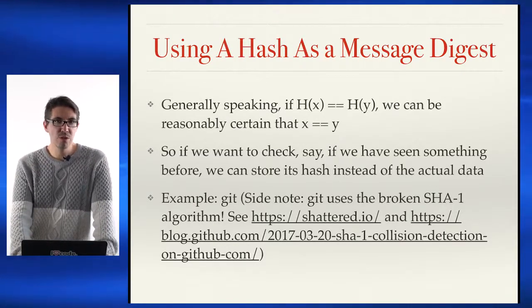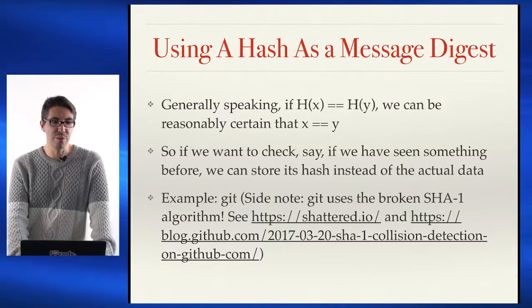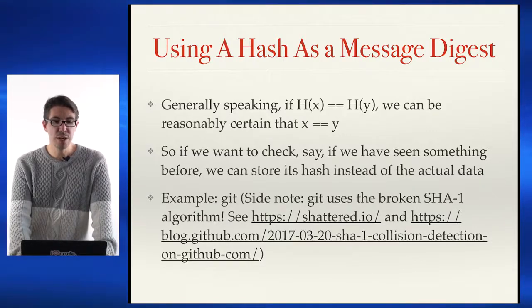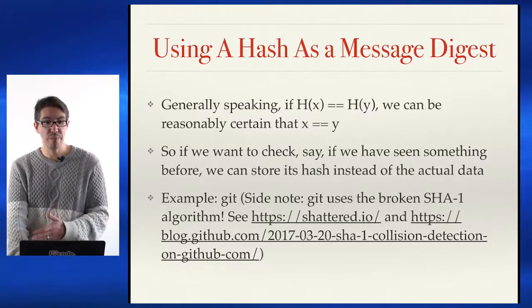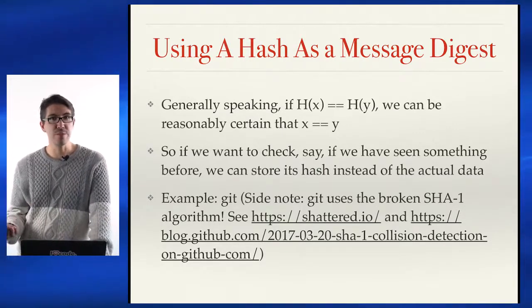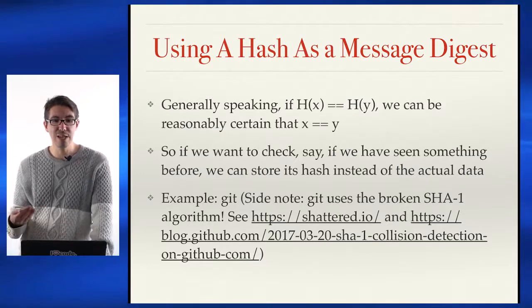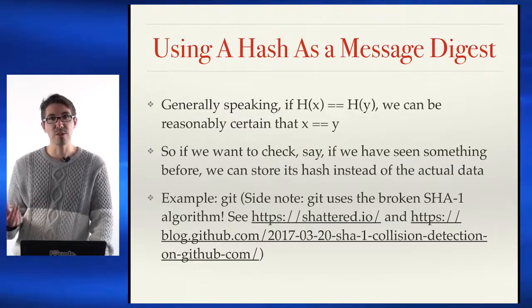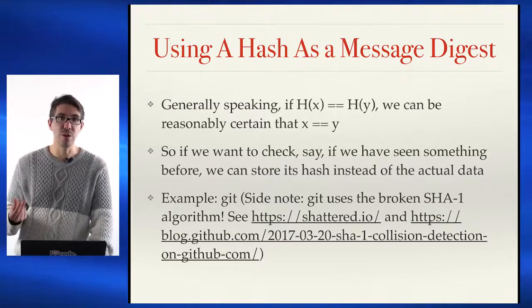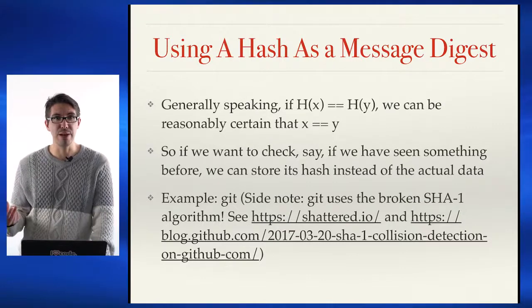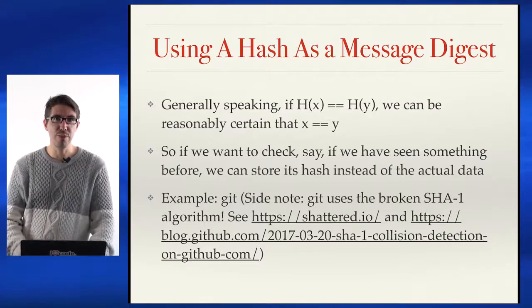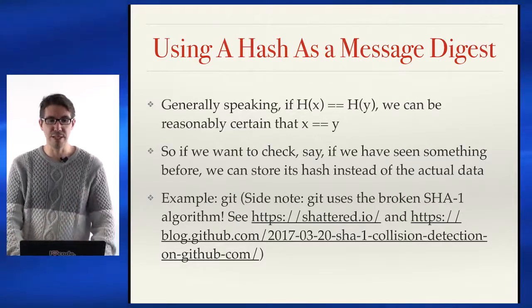We can also use a hash to prove what we said. If h of x equals h of y and we're collision-resistant, we can be reasonably certain that x equals y. So if we want to check that we have seen something before, we can just store its hash instead of the actual value. And since the actual value can be of arbitrary length, whereas the hash will always be of a certain size, this is very useful in places where you have limited memory — especially important on a blockchain where space is limited because the blockchain is replicated amongst many different servers.